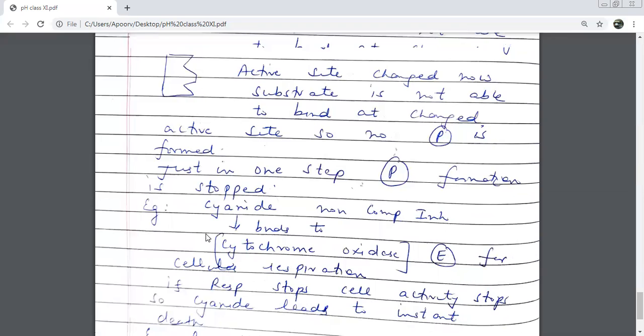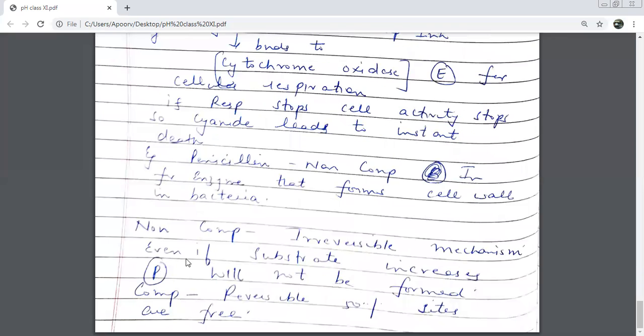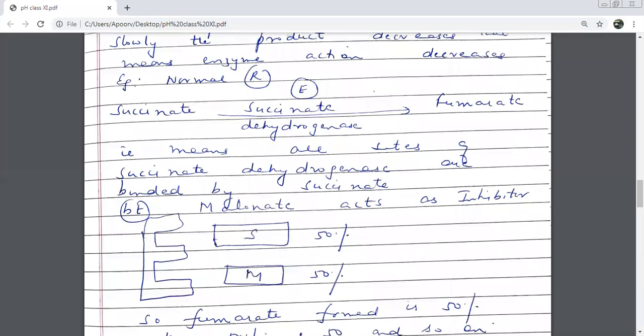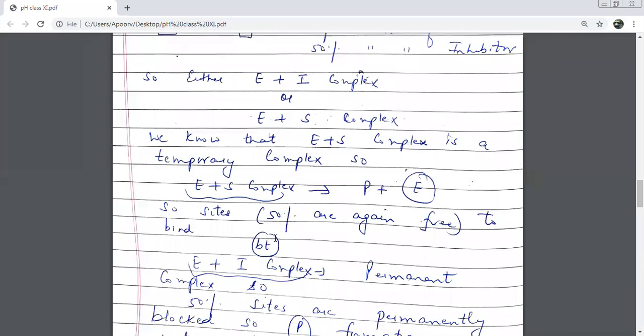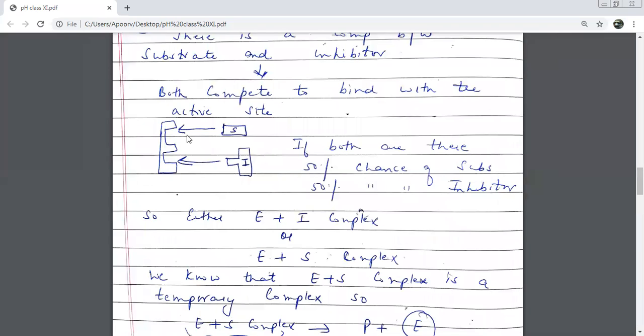But when we talk about competitive, it's a reversible process. How it is reversible? Because 50% sites are free. And again, substrate can bind. This is a permanent complex, but this site is reversible. This complex will be broken, this site will be free, and the substrate will be added.